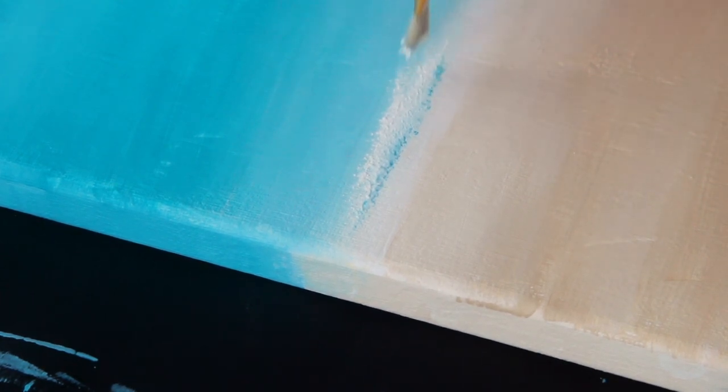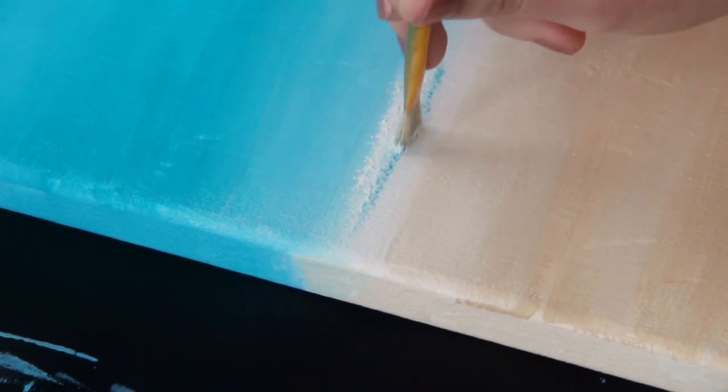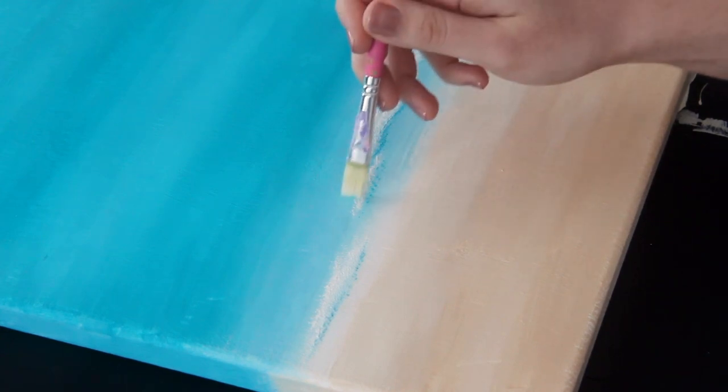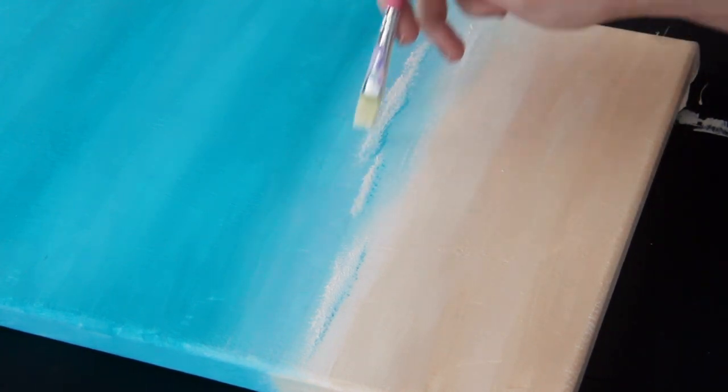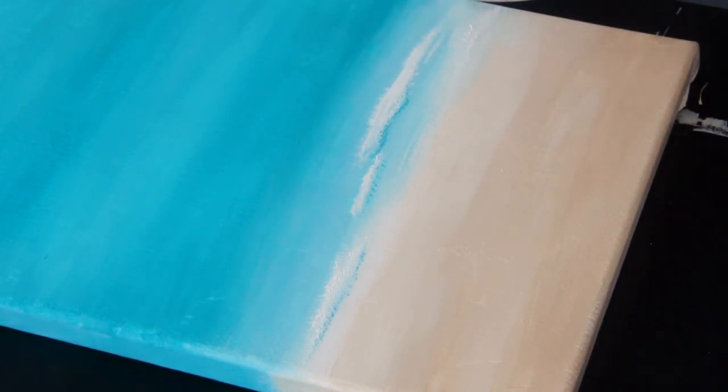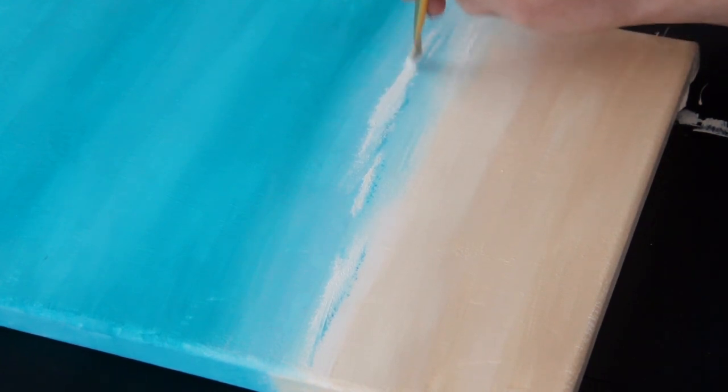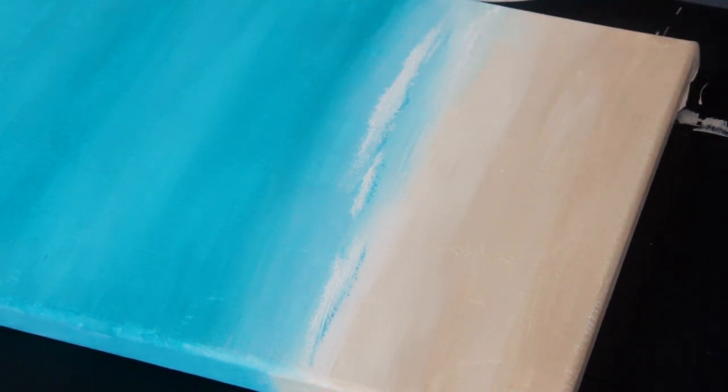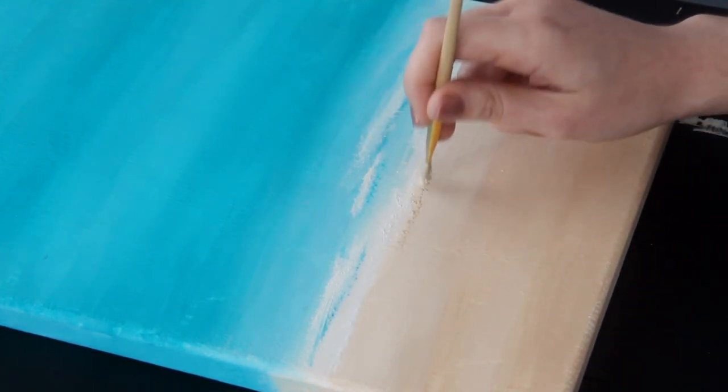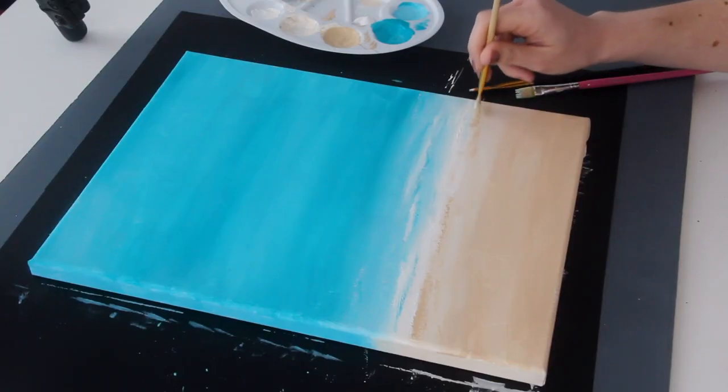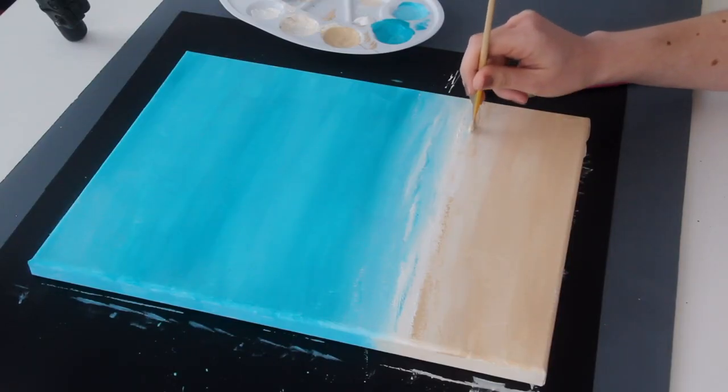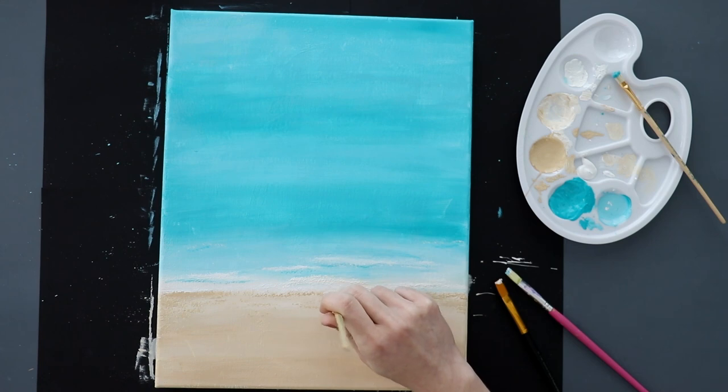And again, just blend them together until you're happy with how it looks. So it's really up to you how many waves you want to add. You can make them a little more subtle by blending the paint with a soft paint brush and then adding a little bit of the texture back in with the rough brush. And you can also use the same technique with the darker tan color to give the sand a little more texture. So just keep at it until you like how it looks.